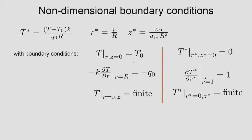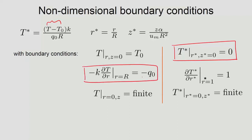The boundary conditions in non-dimensional form are: T* equals 0 at z* equals 0 (inlet); ∂T*/∂r* equals 1 at r* equals 1 (wall flux, which simplifies to unity due to our choice of Q₀R/K as the temperature scale); and T* finite at r* equals 0. This simplicity — zeros and ones in the boundary conditions — makes integration much easier.